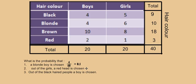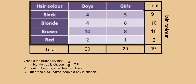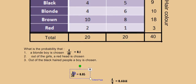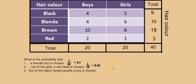The second question illustrates knowing which group you're focusing on. Out of the girls, what is the probability that a redhead is chosen? There is only one redheaded girl, and there are 20 girls altogether, so the answer is 1 out of 20. The temptation is to say 1 out of 40, but the question clearly specifies only the girls. So 1 out of 20, which as a decimal is 0.05.